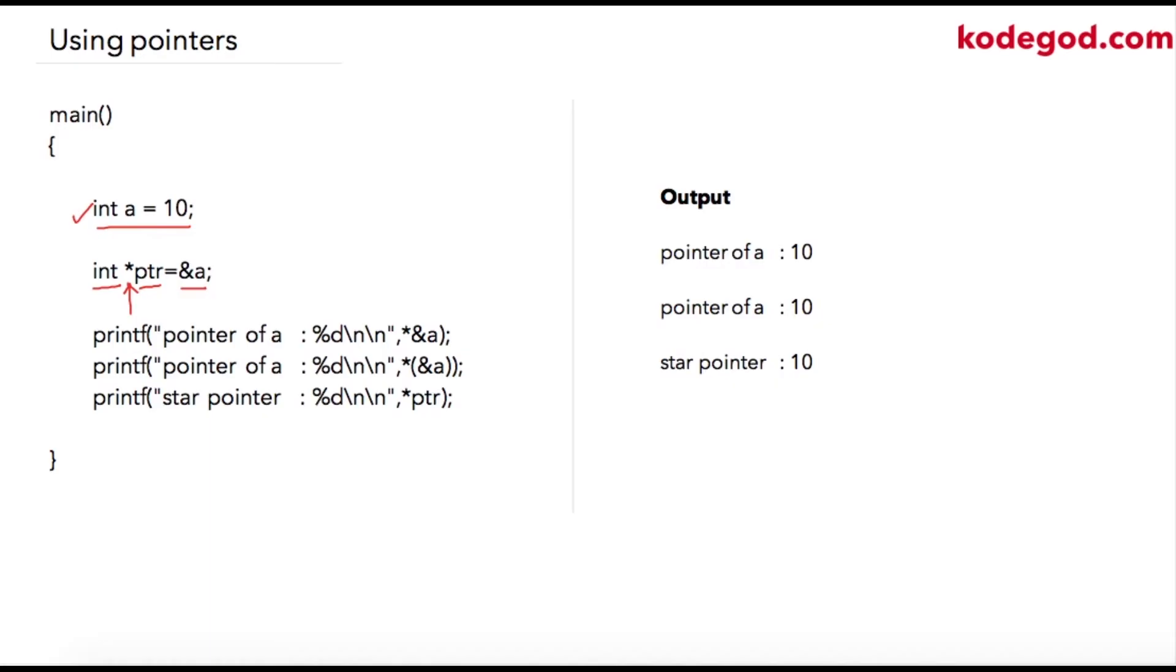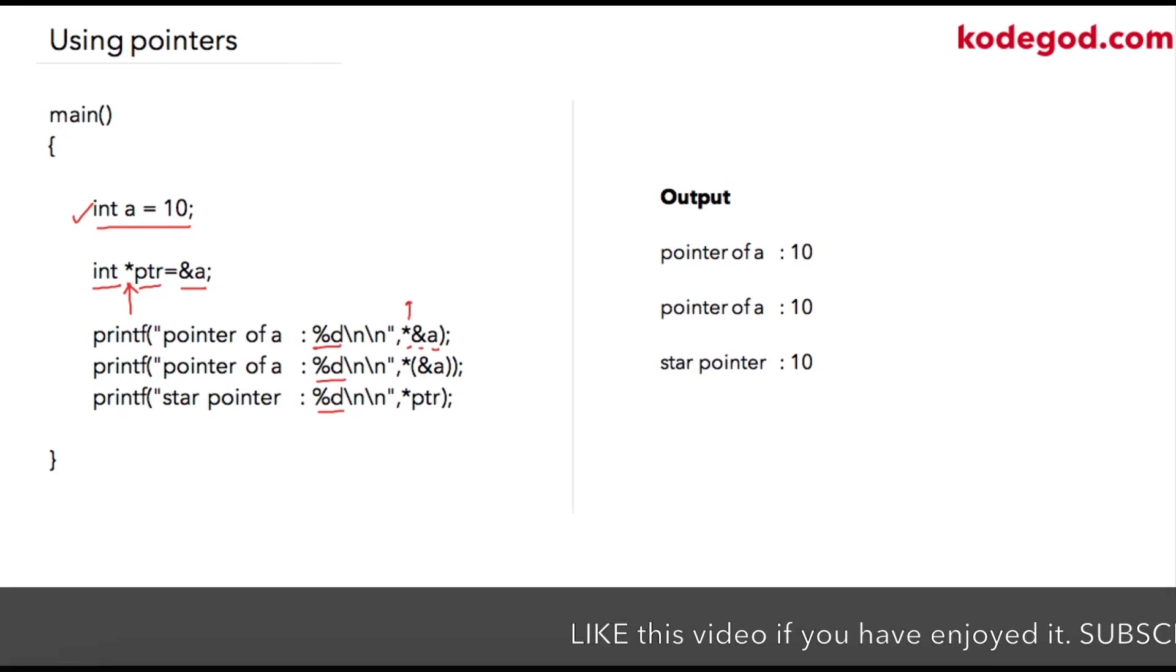Address of variable a. After that I'm printing three integers. First I'm writing star at the rate a. In the previous lecture we have seen that this star can be replaced with 'value at'. So if you simply read it, what the printf statement will be printing here is value at address of a, that will be 10.